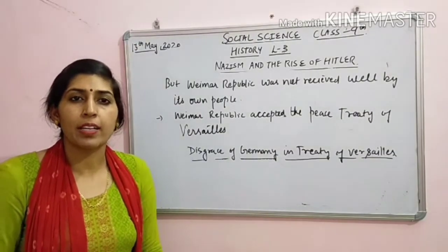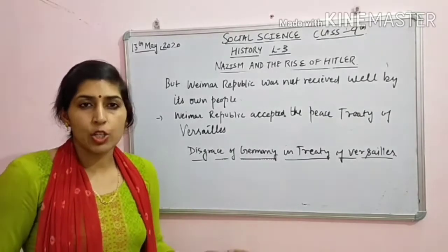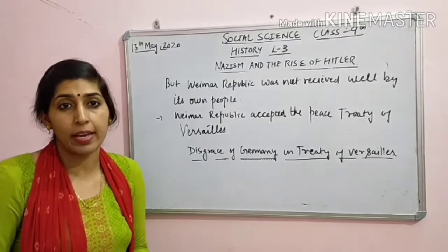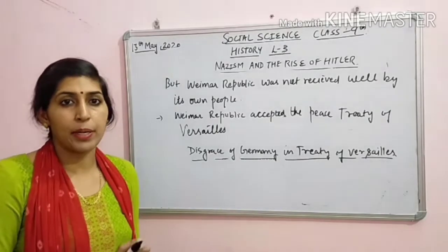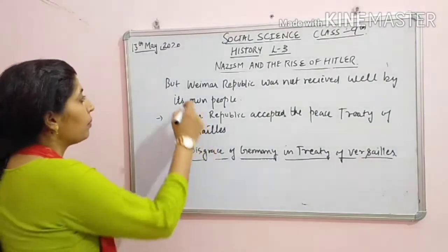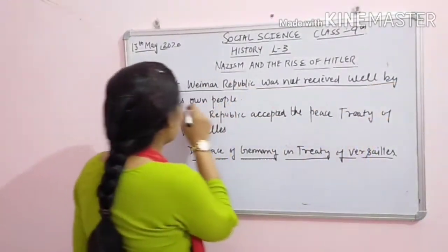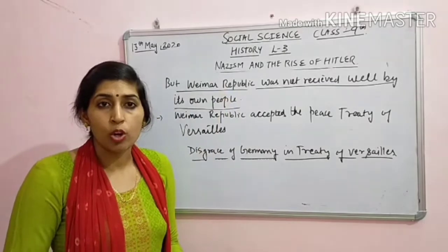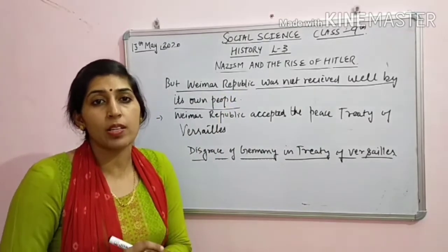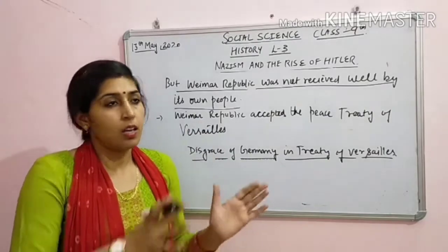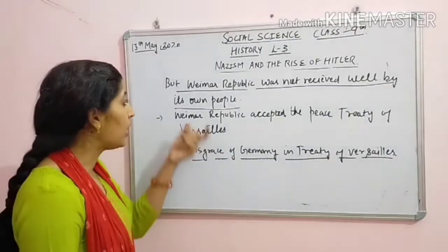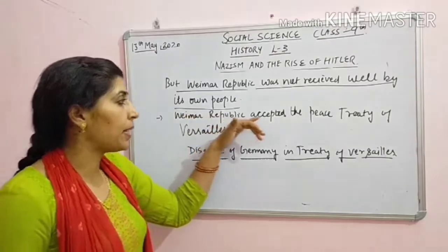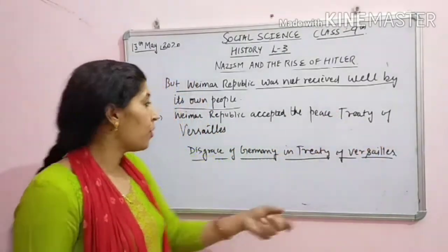Okay, Germany mein First World War ke baad mein emperor ne resignation de diya, abdication ho gaya. Uske baad mein new parliament banai, election ho gaya, new deputies ko chuna gaya, Weimar Republic ban gaya, parliament ban gaya. But problem abhi bhi thi. Kya thi? Weimar Republic was not received well by its own people - matlab Germany ke log accept nahi kar rahe the Weimar Republic ko. Kya uske pichhe reason hai? Uske pichhe ek main reason tha - Weimar Republic accepted the peace treaty of Versailles.